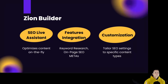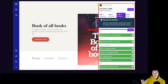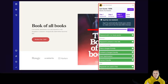For Zion Builder, the SEO live assistant optimizes content on the fly. Features include keyword research, on-page SEO, and metas. You can tailor SEO settings to specific content types. Zion Builder users benefit from Squarly's real-time optimization and comprehensive feature sets — tailor your SEO settings to meet specific needs and enhance overall content optimization.